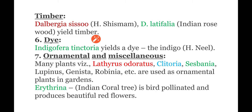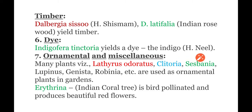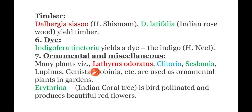The next field is timber. Dalbergia sissoo and Dalbergia latifolia yield timber which is used for making different types of furniture. For dye, Indigofera tinctoria yields a dye called indigo, known as 'neel' in Hindi, which is used as a dye.